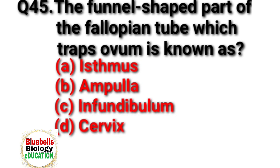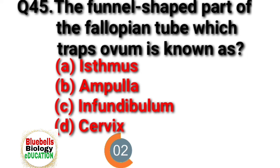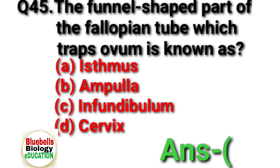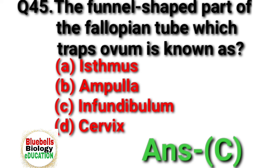Question 45. The funnel-shaped part of the fallopian tube which traps ovum is known as. Option A: isthmus. B: ampulla. C: infundibulum. D: cervix. Answer is C.